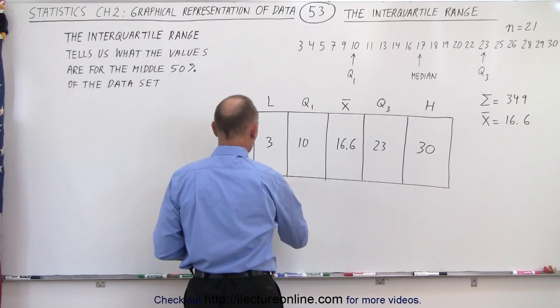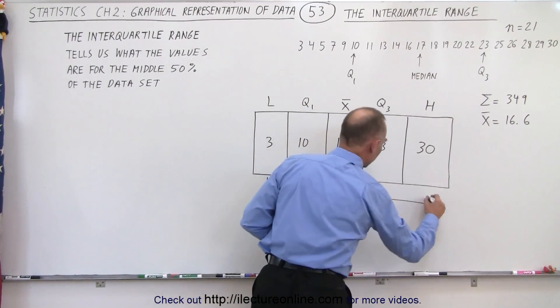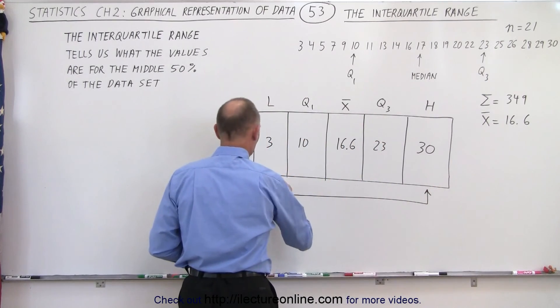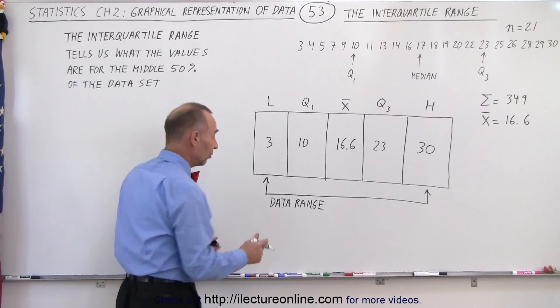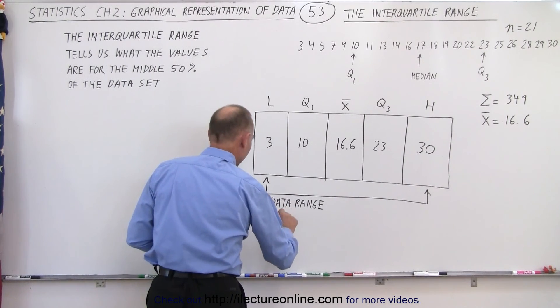So if we go from the smallest value all the way to the largest value, we have what we call the data range. And in order to calculate that, what that range is, we can take the high minus the low.